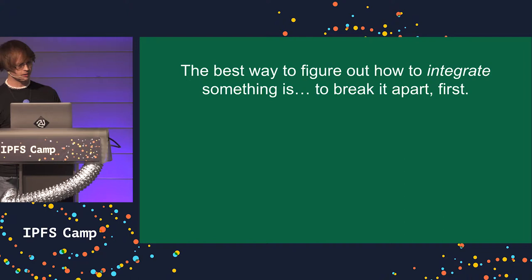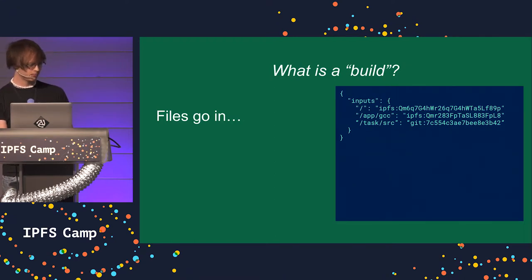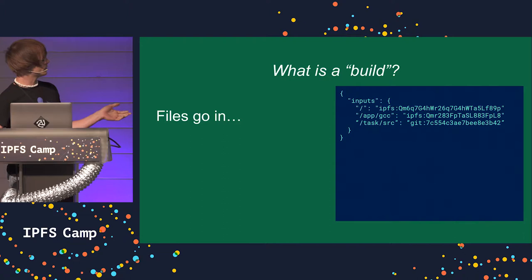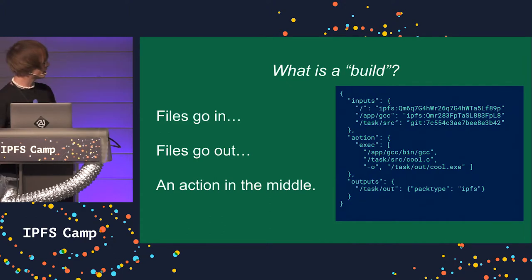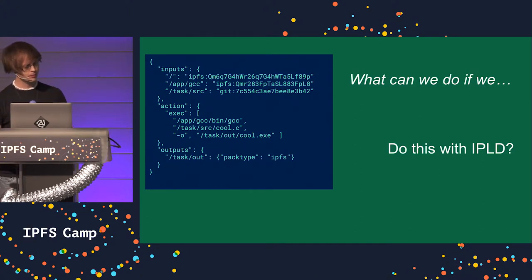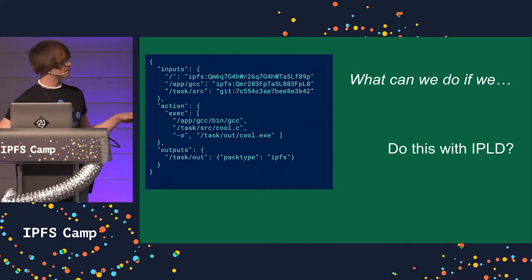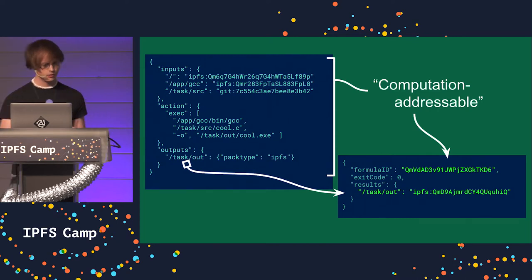In figuring out how to integrate things, I think it's best to break the problem down first. So what is a build? A build involves a bunch of files going in. Conveniently, we have a file system called IPFS which is really good at identifying files. Eventually some files come out and some sort of action takes place in the middle. One idea is that we could build better ways of doing builds using IPLD — our interplanetary linked data format — which would let us take a hash of the whole build instruction and go from content-addressable to computation-addressable.